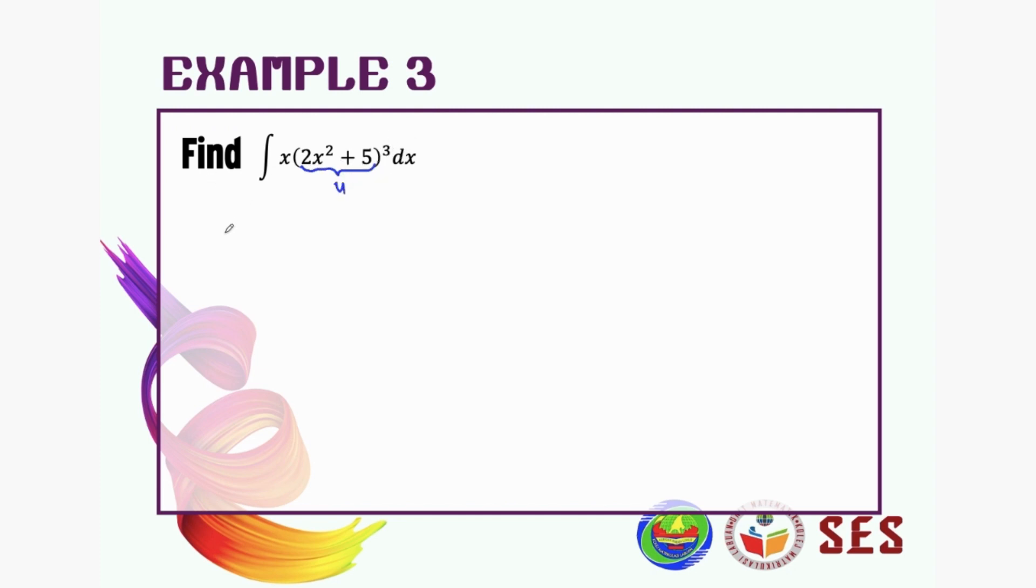So we let u become 2x squared plus 5, and we differentiate with respect to x. We're gonna get 4x.